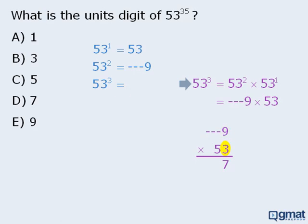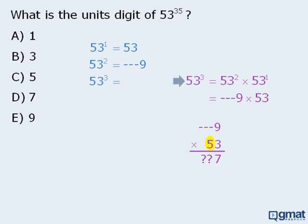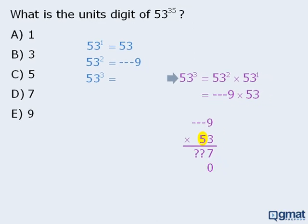From here, the remaining calculations are unimportant, because before we can multiply 5 by any numbers, we must first add a 0. As such, the remaining calculations have no effect on the outcome when we add these results. As we can see, the unit's digit of 53 cubed is 7.